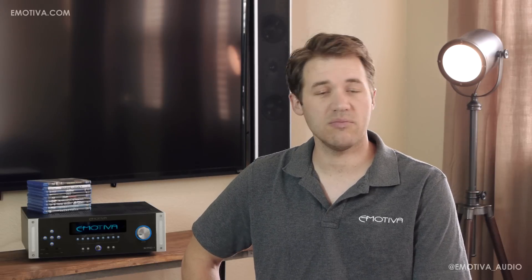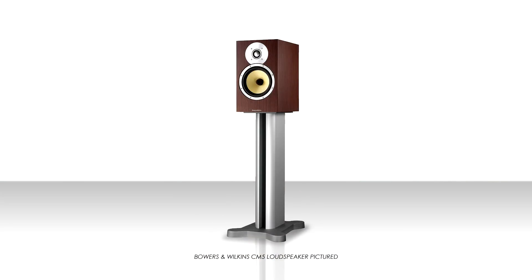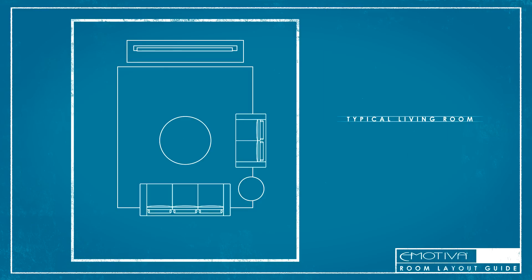To start, we're going to want to place our left and right main loudspeakers. These can be floor standing, bookshelf, powered, or non-powered — they can be whatever you need them to be. The left and right main loudspeakers typically flank your display, be it a projection screen or HDTV. Directly below your display, but in line with your left and right main speakers, is the center channel.